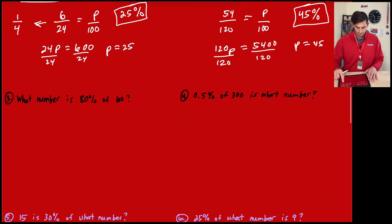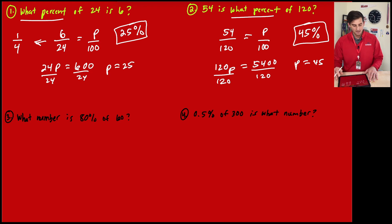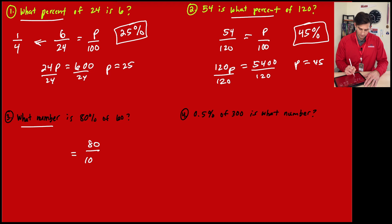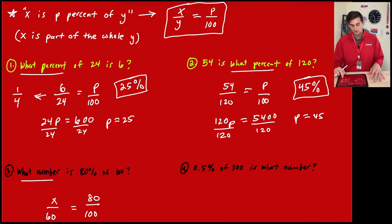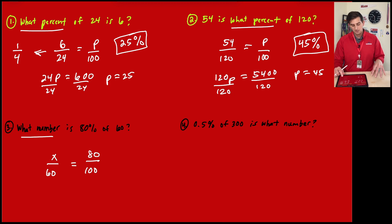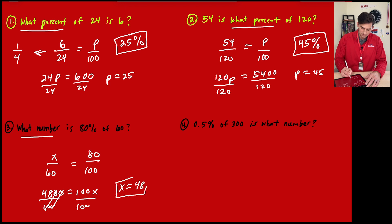Now let's find a part, still using x over y equals p over 100. Number three: 'What number is 80% of 60?' We're given the percentage, so 80 over 100 goes on the right. 60 is the whole, and we're finding the part x. Cross multiplying: 60 times 80 equals 4,800, which equals 100x. Dividing both sides by 100 gives x equals 48. So 48 is the number that is 80% of 60.